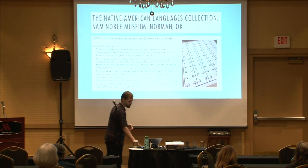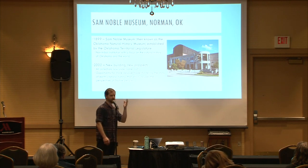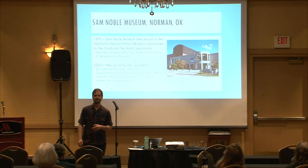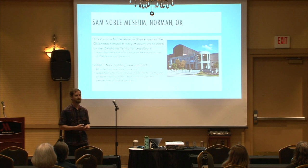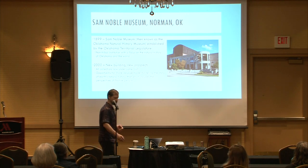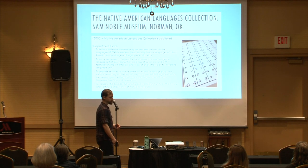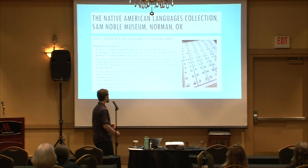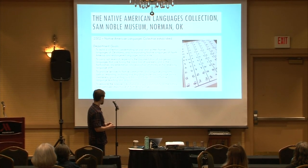The building on the University of Oklahoma campus is deemed by the state of Oklahoma as a T5 shelter — meaning it can sustain a level 5 tornado. We're in Tornado Alley, so people feel good about depositing their materials at our building where they're safe. In 2002, one of the new implementations was to establish a Native American Languages Collection.